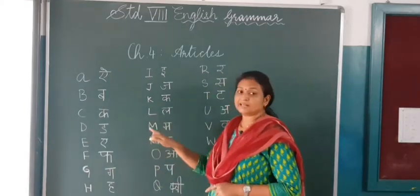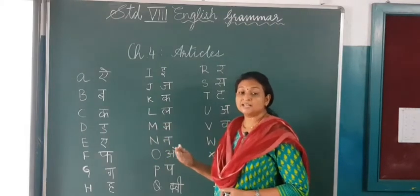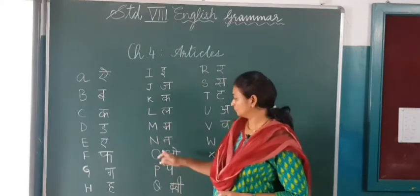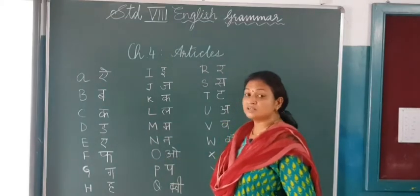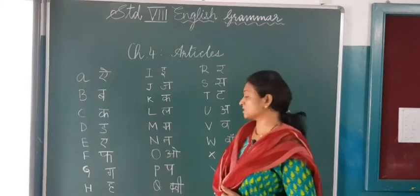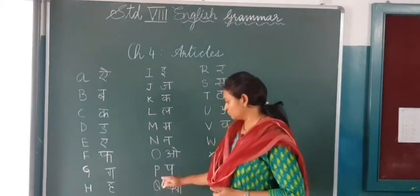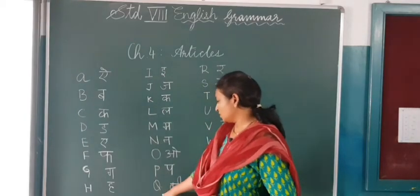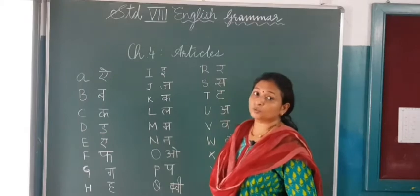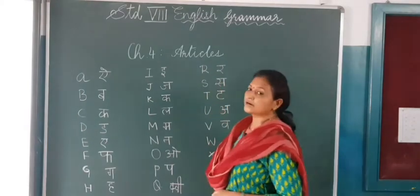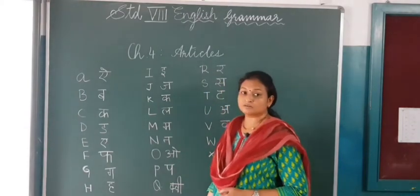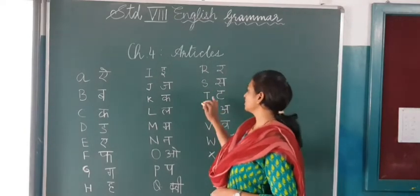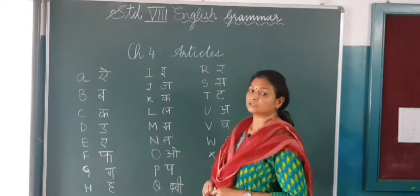L is pronounced as — lion. M gives the sound — mango. N gives the sound — nostrils. O — orange. P gives the sound — parrot. Q gives the sound — queen. R gives the sound — rat. S gives the sound — salt. T gives the sound — tomatoes.